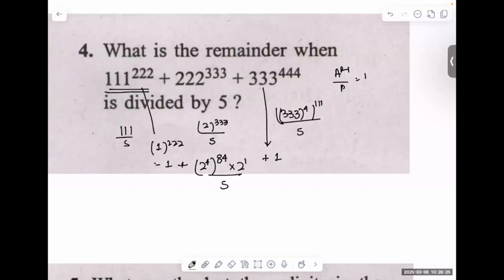Is this clear? This entire value becomes 1. 1 plus 2 plus 1. What's my remainder? 4 is my remainder in this case.